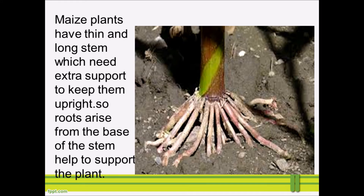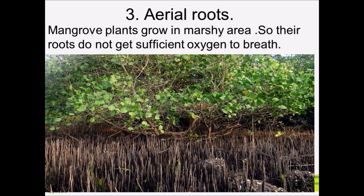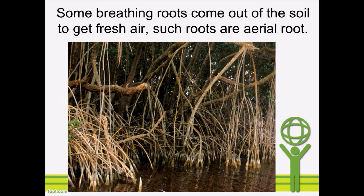Base plants have thin and long stems which need extra support to keep them upright, so roots arise from the base of the stem to help support the plant. Third, special roots are the aerial roots. Mangrove plants grow in marshy or mud areas, so their roots do not get sufficient oxygen to breathe. Some breathing roots come out of the soil to get fresh air — such roots are called aerial roots.